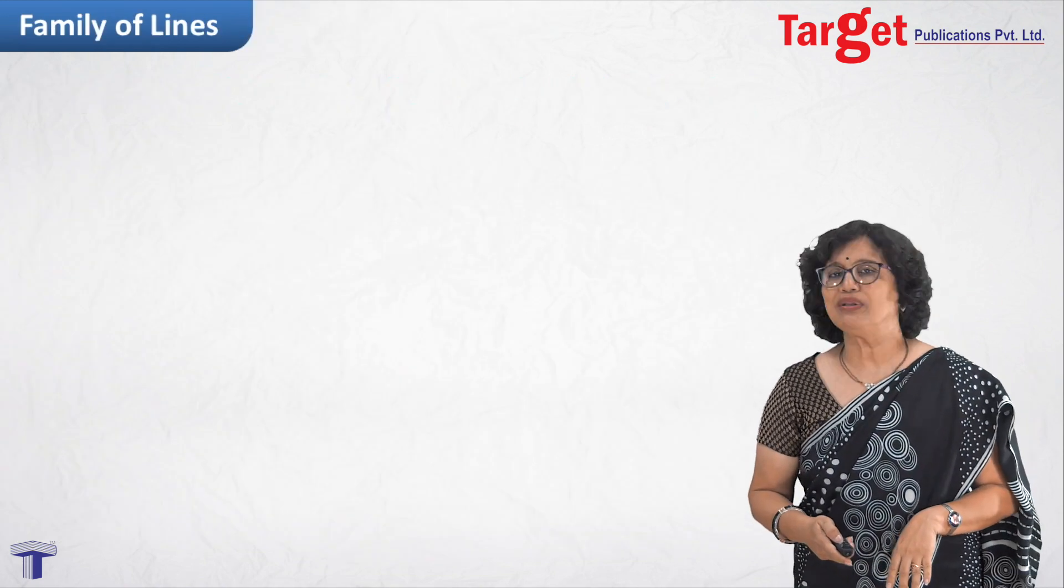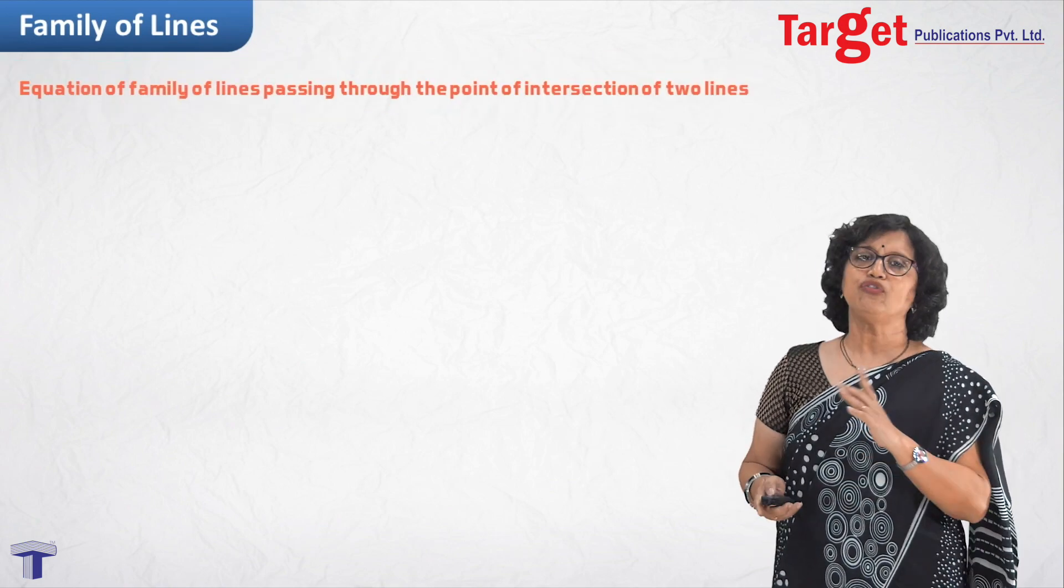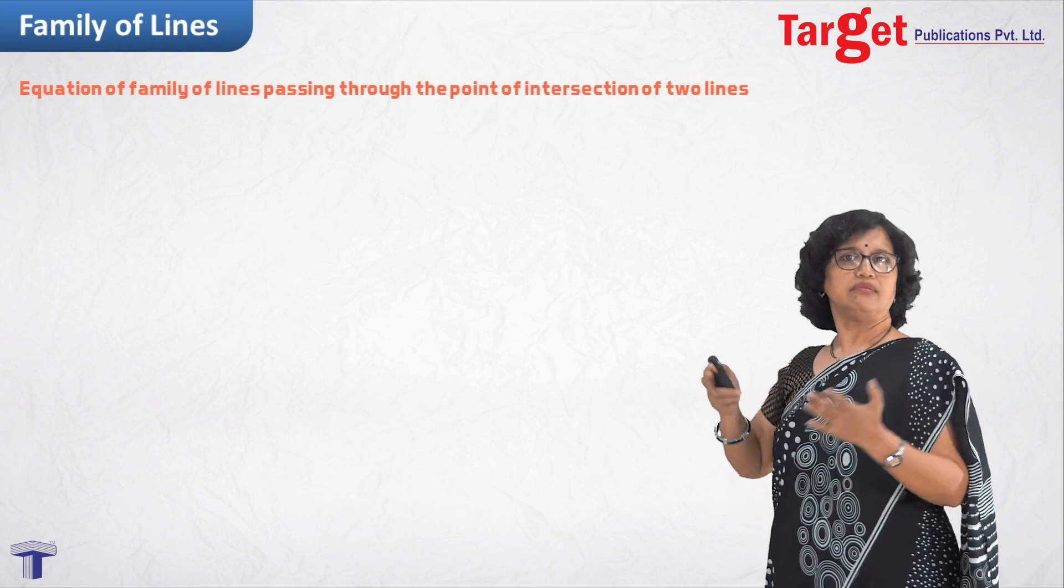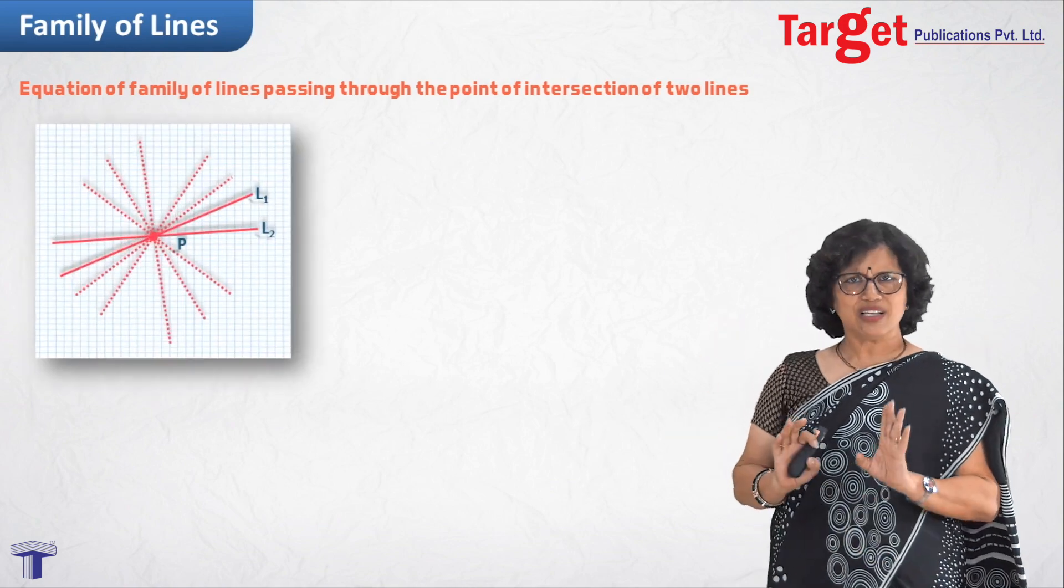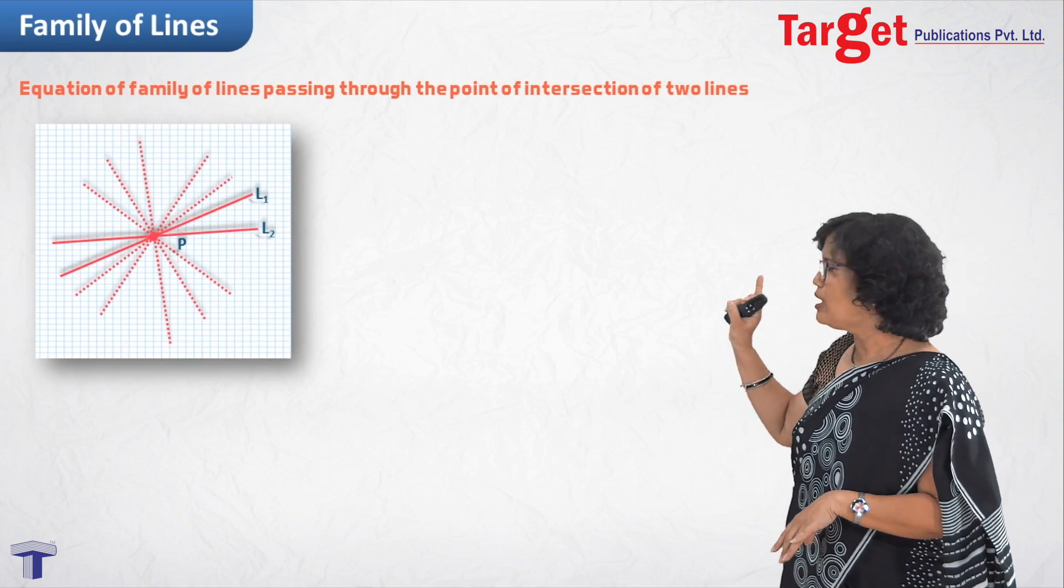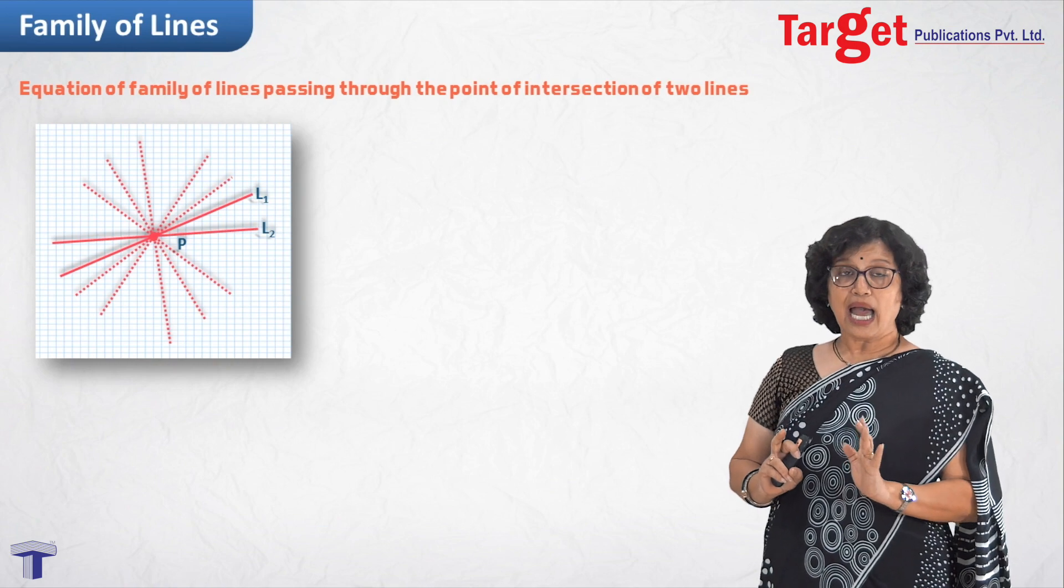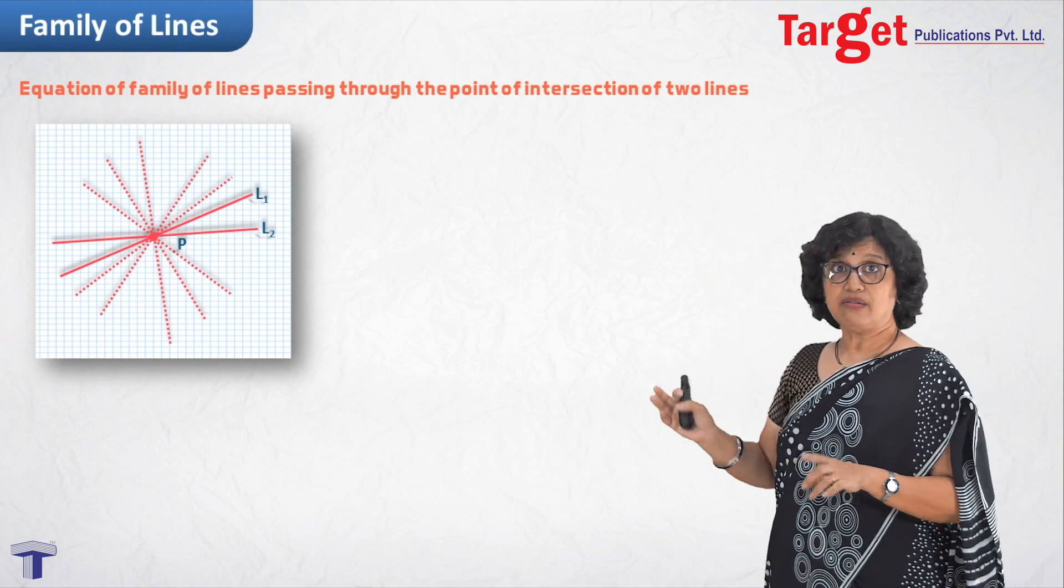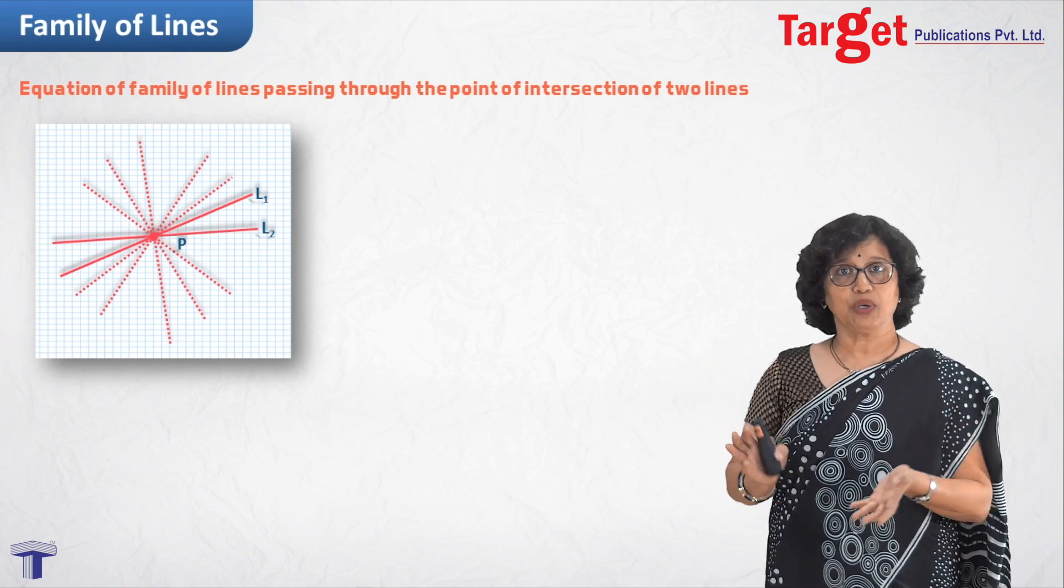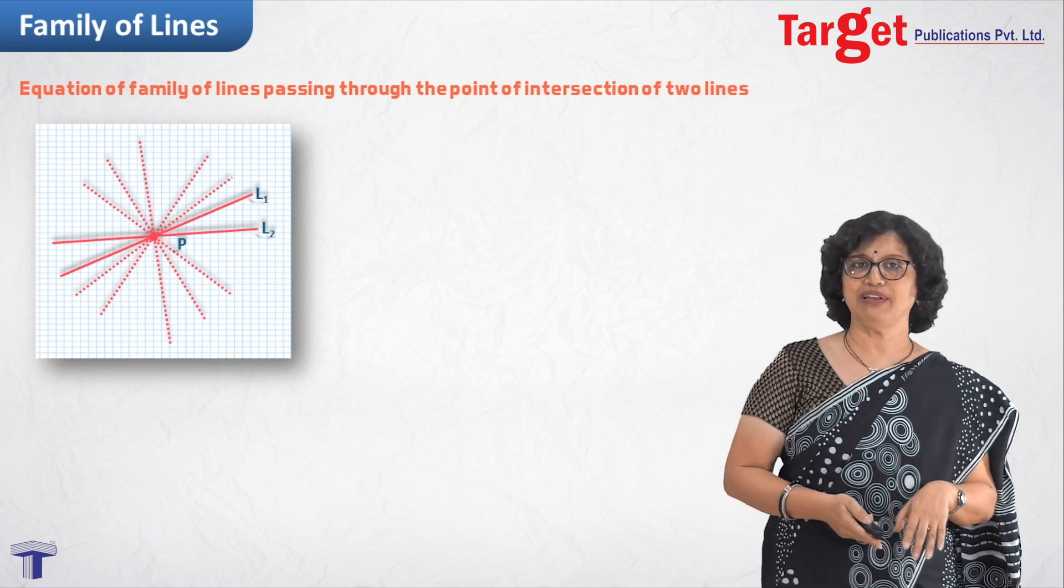Now, let us start with a new thing. Equation of family of lines passing through point of intersection of two given lines. Statement looks quite bigger. I mean the title looks quite bigger. But picture is not all that bad. I am showing here L1 and L2, two lines passing through point P. And I am saying family of lines. Means there are other dotted lines which are all the members of the family, which all pass through point of intersection of L1 and L2.